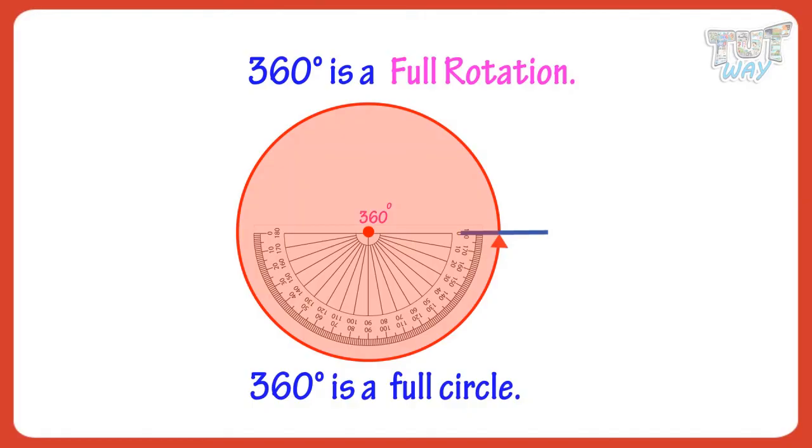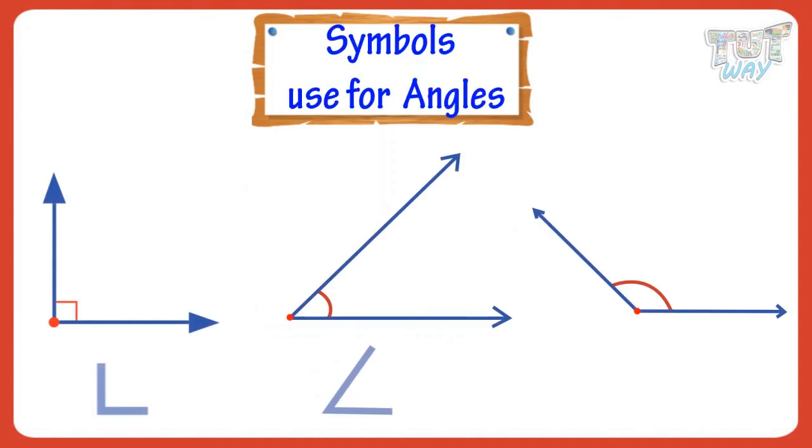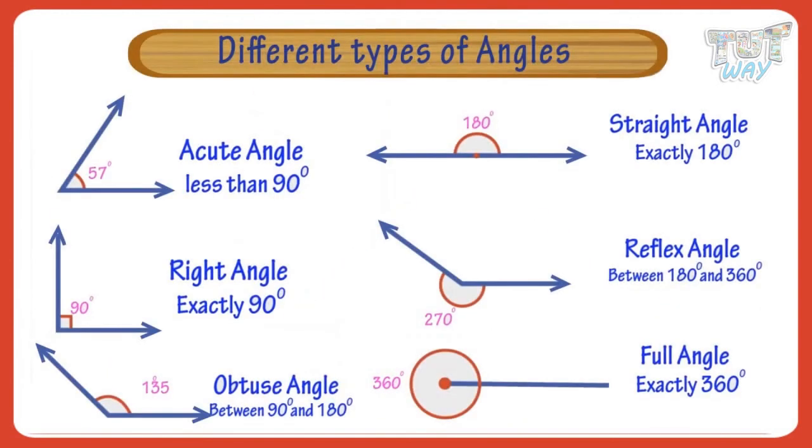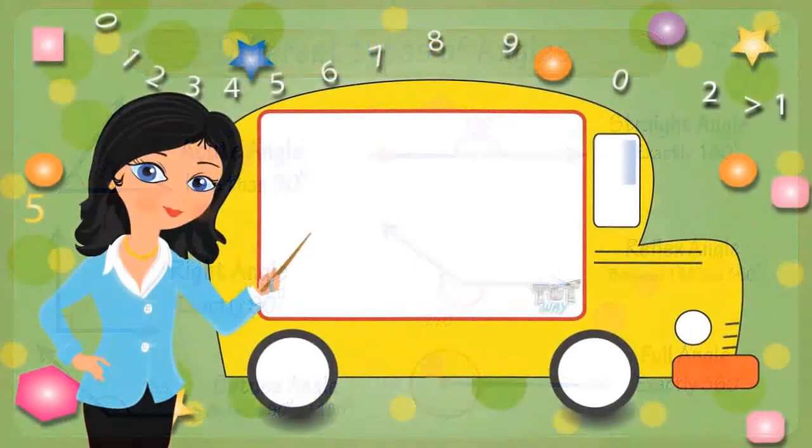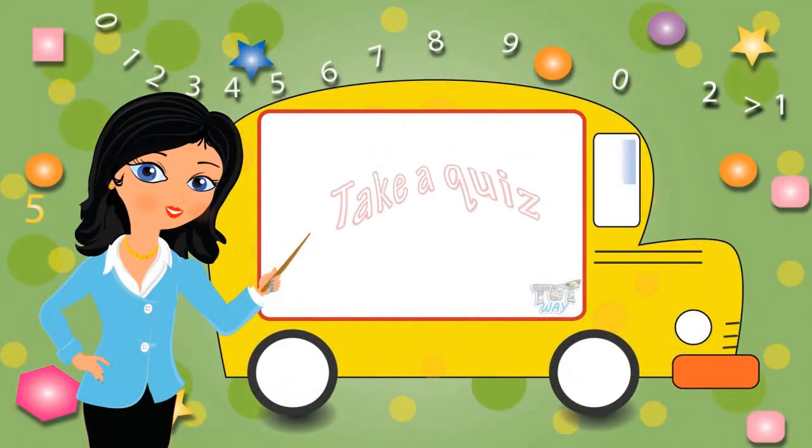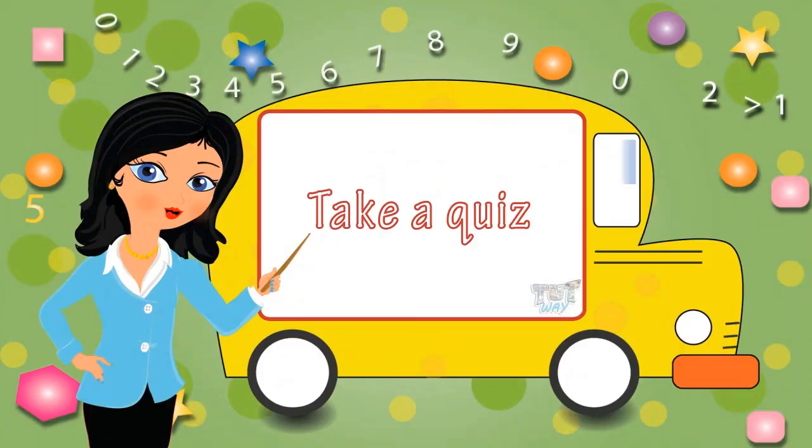So kids, today we have learned what is an angle, different symbols for the angles, and different types of angles. Now, go ahead and take a quiz to learn more. Bye-bye!